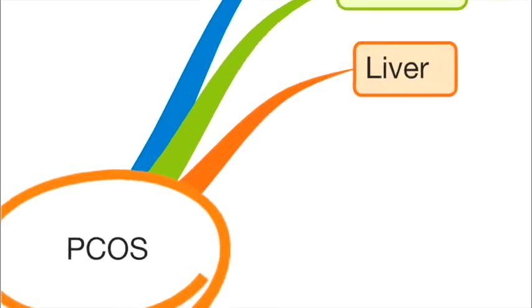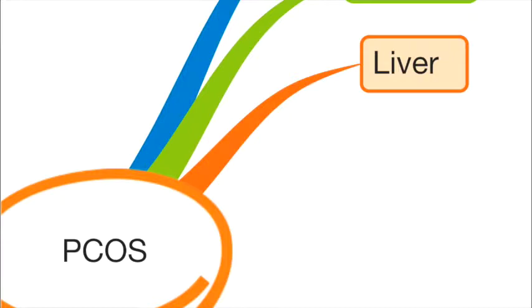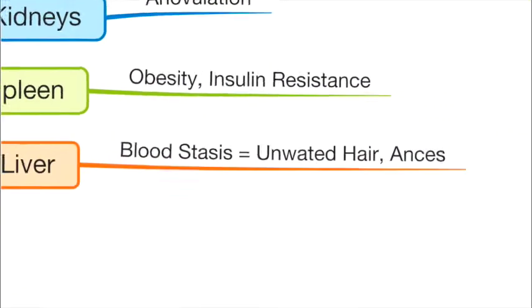The third component of the treatment would be liver. Liver stagnation, that is the flow of energy is stuck in the liver, and this gives blood stasis meaning the blood cannot flow smoothly.